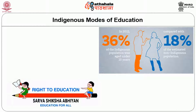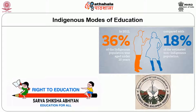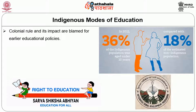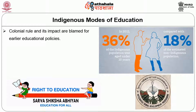Beyond post-secondary education, there is a serious gap between the two populations. Disparities in accessing university education continue even with the efforts of programs like Sarvashiksha Abhiyan, integrated tribal development programs, and tribal sub-plans. Colonial rule and its impact are blamed for earlier education policies. The policies of the 1990s in particular witnessed far-reaching changes in the pedagogy and other aspects of education from primary to higher levels.